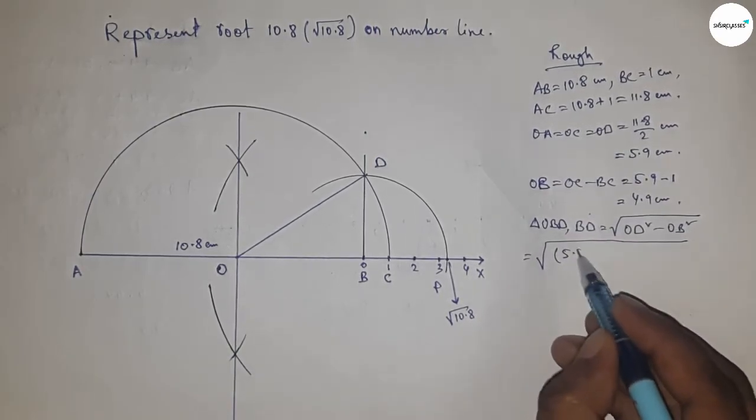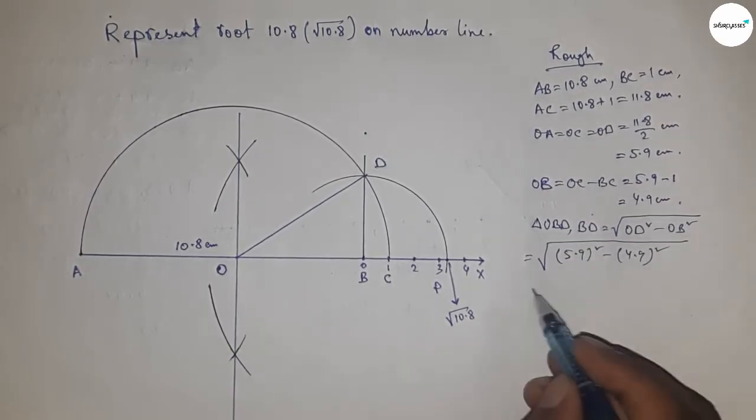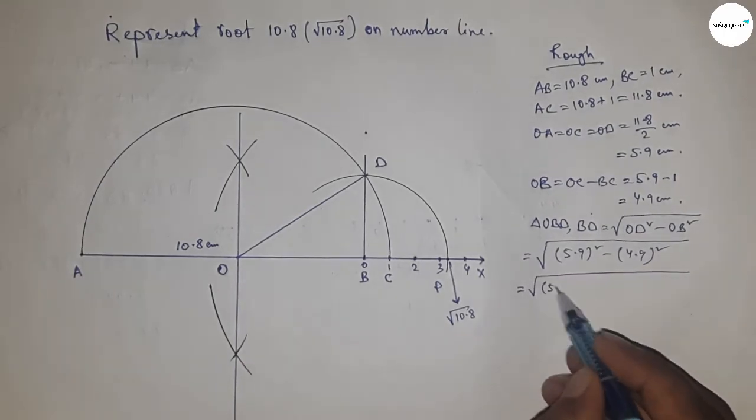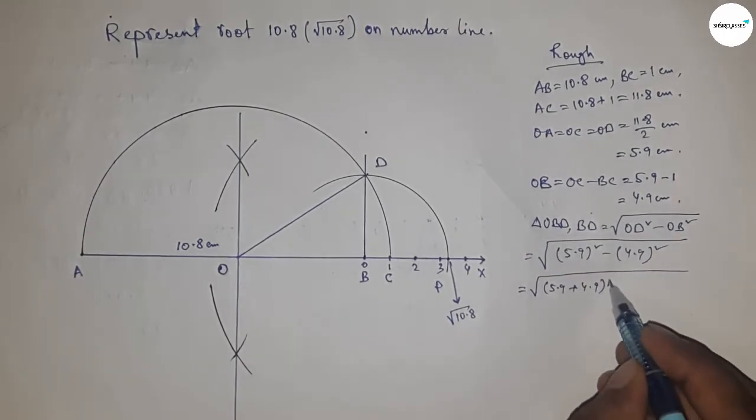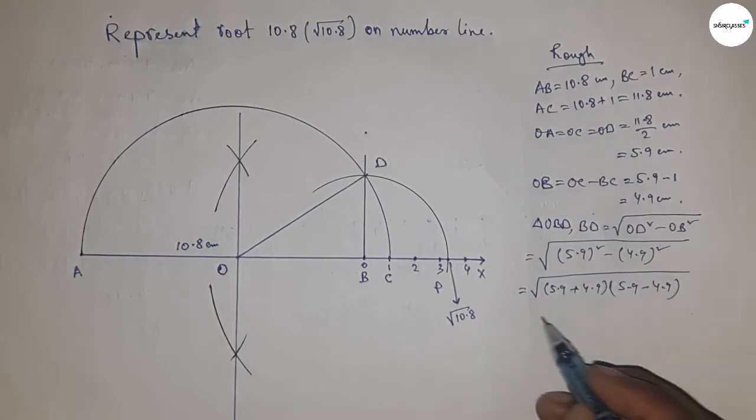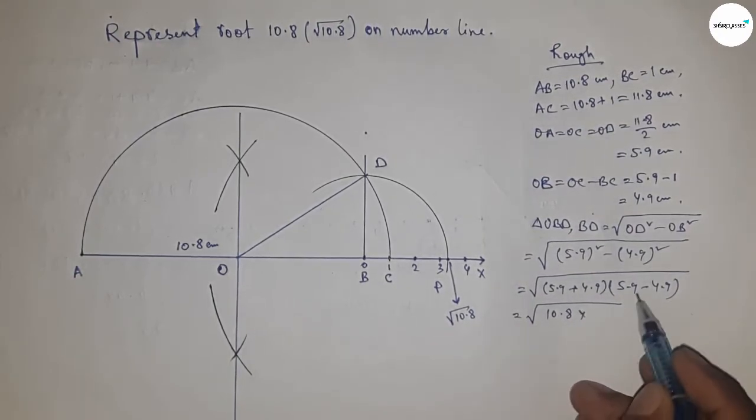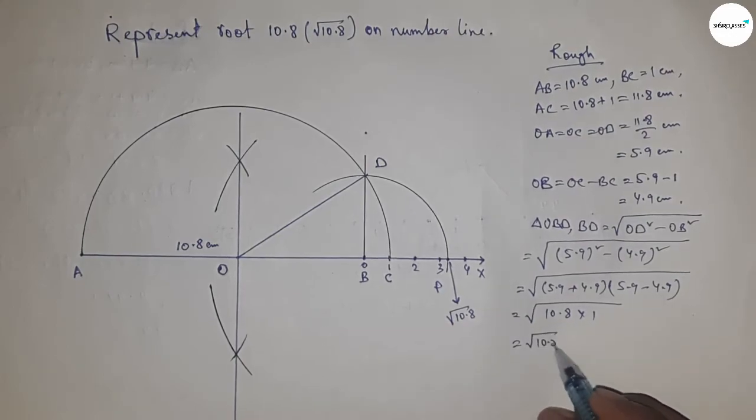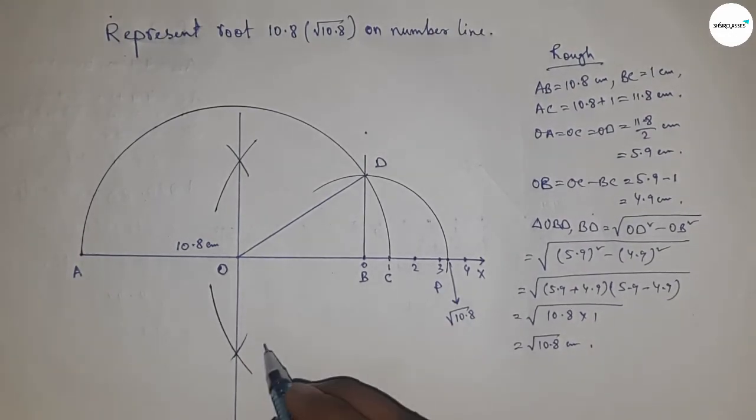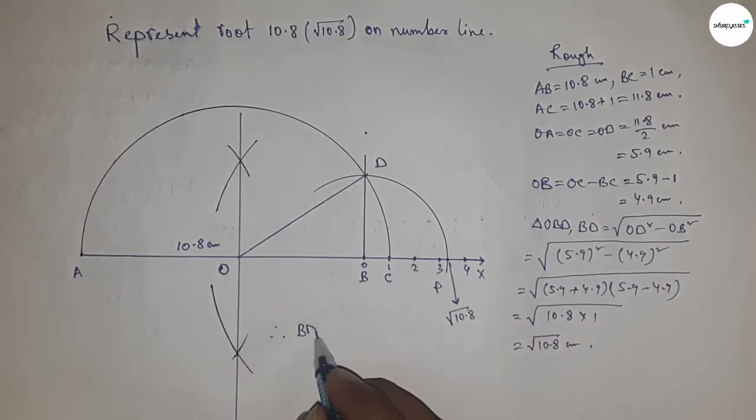Now putting the value of OD and OB, and next I am going to use a formula a square minus b square equal to a plus b and a minus b. So here applying the formula, from this, this is 10.8 into 1, so this is root 10.8 centimeter. Therefore distance BD and BP are equal to root 10.8 centimeter.